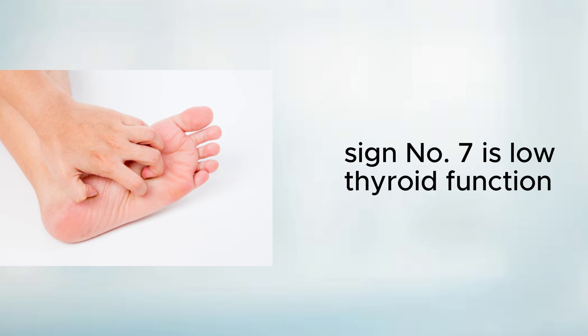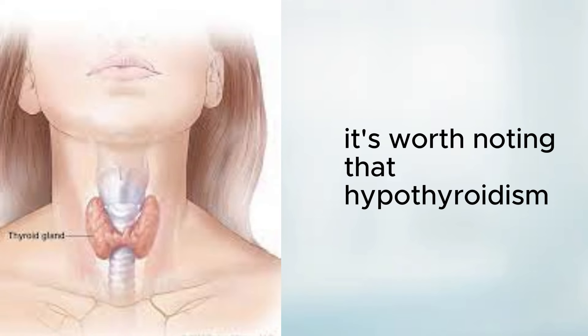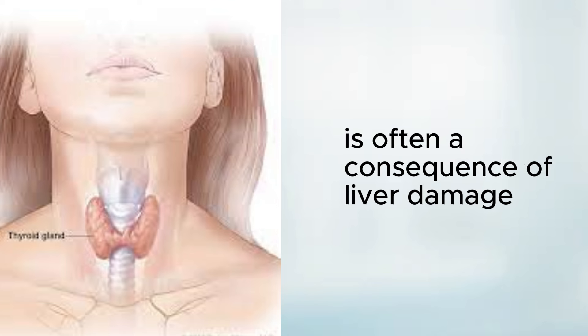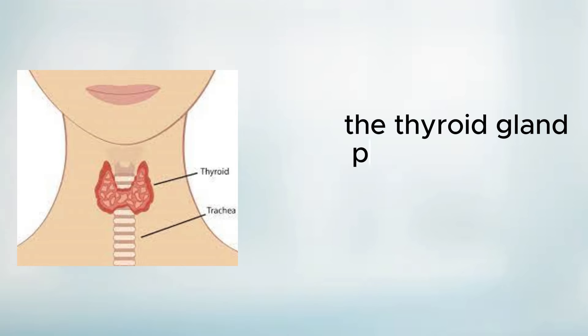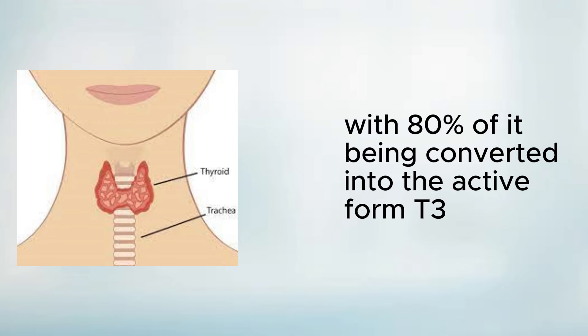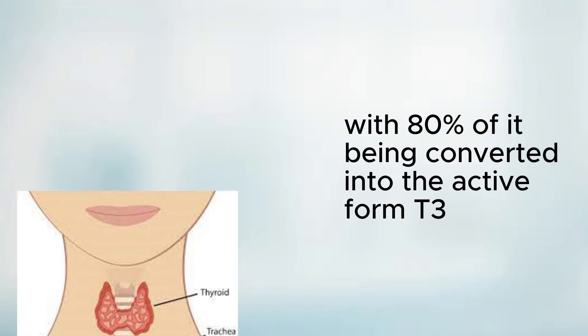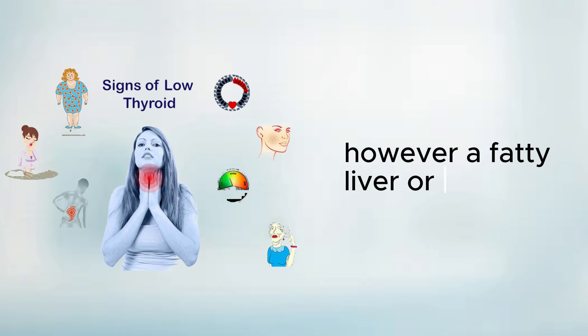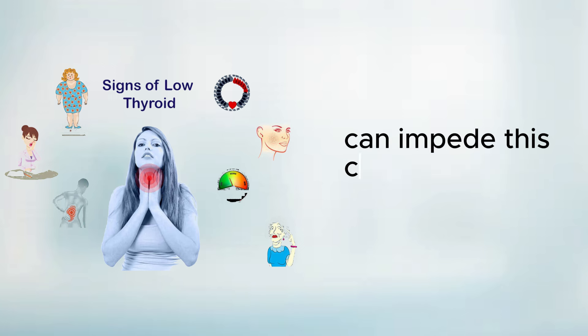Sign number seven is low thyroid function. It's worth noting that hypothyroidism, or an underactive thyroid, is often a consequence of liver damage. The thyroid gland produces a hormone called T4, with 80% of it being converted into the active form T3 within the liver. However, a fatty liver or cirrhosis can impede this conversion process, leading to sluggish thyroid function and metabolic issues.